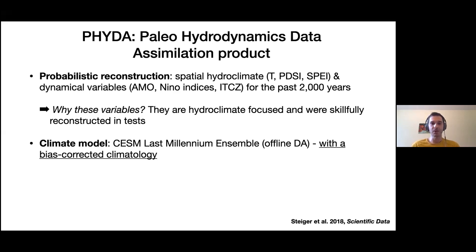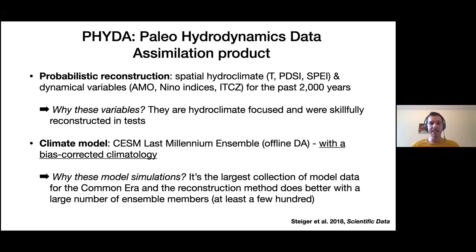The climate model we use is the CESM Last Millennium Ensemble, where I bias-corrected the climatology of the model with a very simple bias correction. We use these particular model simulations because it's the largest collection of model data for the Common Era, and the reconstruction method does better with a large number of ensemble members — it's basically the fundamental statistical principle of the law of large numbers. The more you have, usually the better it does until your computer can't handle it anymore.